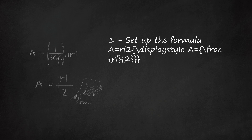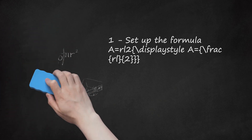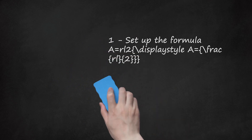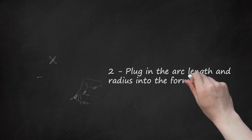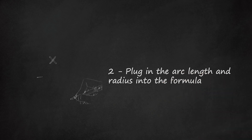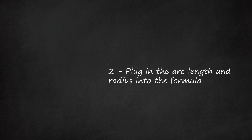The complete formula would be A = (L / 2πr) × πr², but you can simplify it to A = RL/2. Step 2: Plug in the arc length and radius into the formula. You will be multiplying these two numbers to get a new numerator. For example, if the arc length is 5 centimeters and the radius is 8 centimeters, your new numerator will be 40.